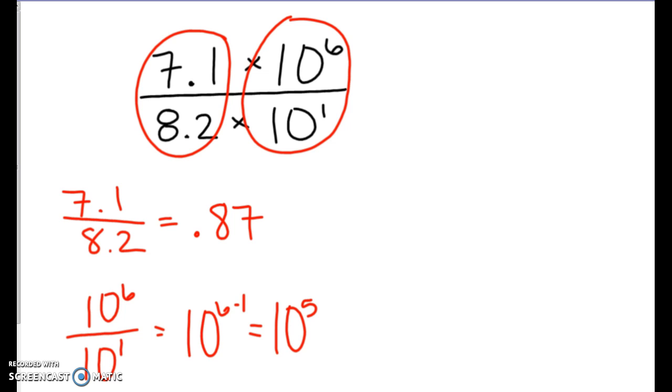So we are going to put them together because we want our answer in scientific notation. So we have 0.87 times 10 to the 5th power. Now I hope everybody notices that we are not in scientific notation. Because 0.87 is not greater than 1. That means we need to move our decimal place over 1.